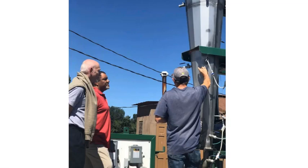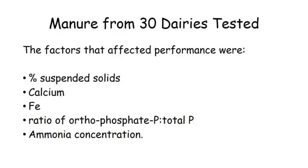From 30 different dairies tested over about an 18-month period, we found the biggest factors affecting performance were: percent of suspended solids, calcium content (which interferes with phosphorus availability), higher levels of iron, ratio of ortho-phosphate to total phosphate, and ammonia concentration. Running the system in eastern Washington during summer we found ammonia volatilization from the new manure left us short on ammonia needed for struvite formation. With anaerobically digested manure we see more phosphorus in inorganic form, which means greater struvite production.